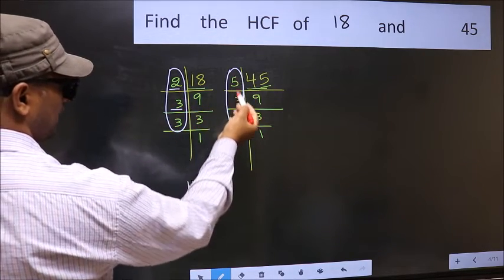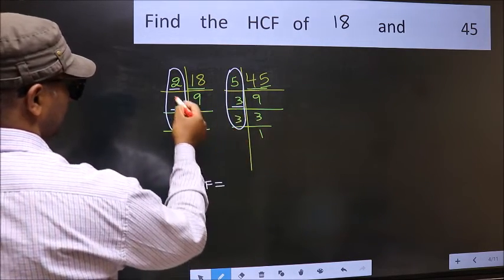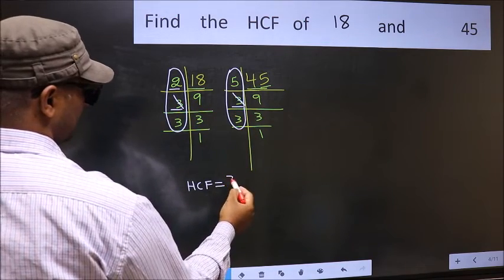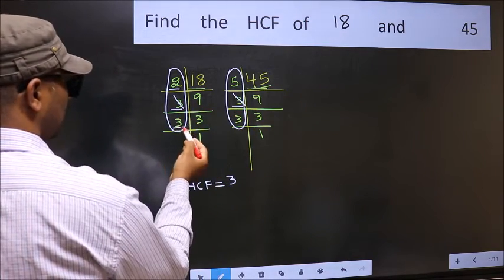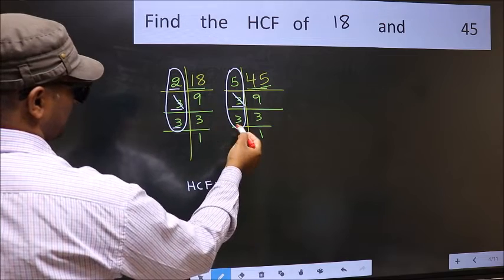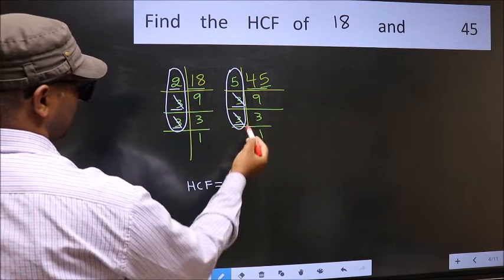Next number 3. Do we have 3 here? Yes. So cut 3 right here. Next number 3. Do we have 3 here? Yes. So cut 3 right here.